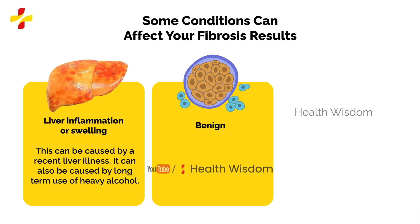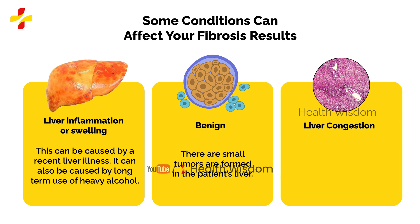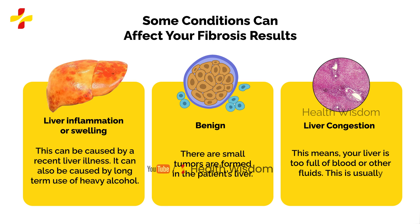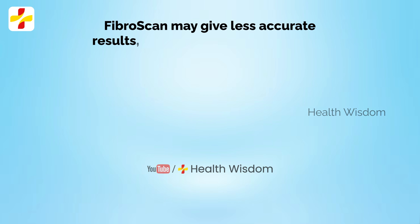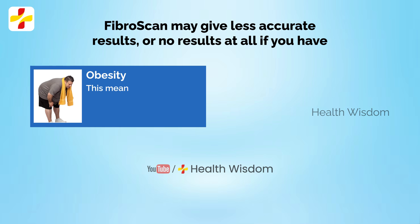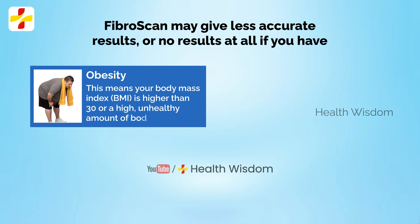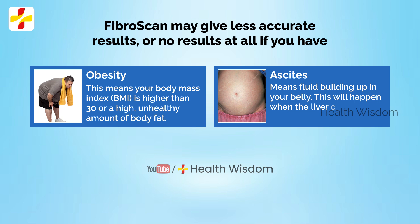It can also be caused by long-term heavy alcohol use. Benign: small tumors formed in the patient's liver. Liver congestion: this means your liver is too full of blood or other fluids, usually caused by heart failure. Fibroscan may give less accurate results or no results at all if you have obesity — meaning your body mass index is higher than 30 or an unhealthy amount of body fat — or ascites, meaning fluid building up in your belly, which happens when the liver condition worsens.